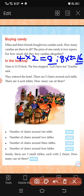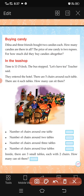There are five chairs around each table. There are four such tables. How many chairs in all? There are four such tables. There are five chairs around one table. Number of chairs around two tables: ten.